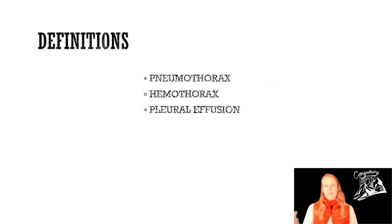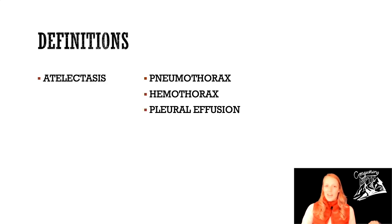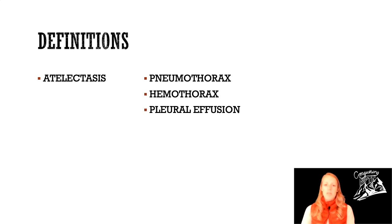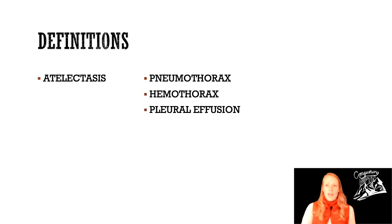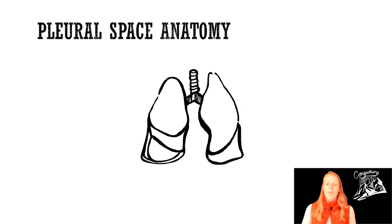We have three terms: pneumothorax, hemothorax, and pleural effusion — we're going to clump those together because those are all pleural problems; there's something wrong with the pleural space. Atelectasis is on its own, and we'll explain why we separate these in a little bit.